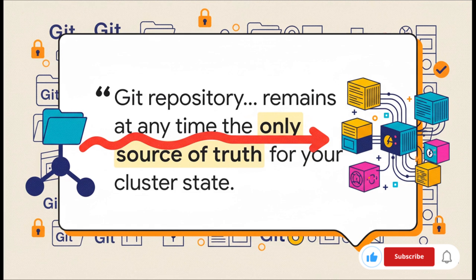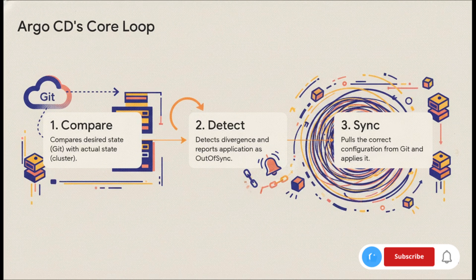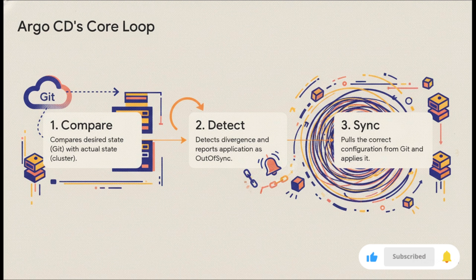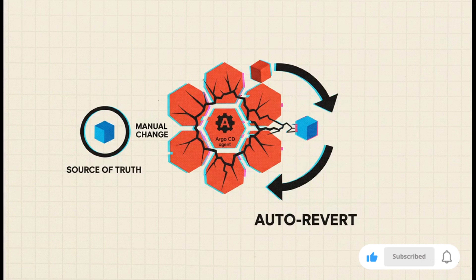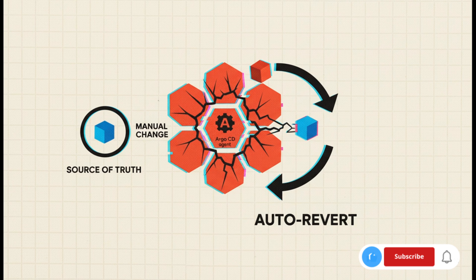The magic is in a continuous loop: ArgoCD is constantly comparing the desired state in Git with the actual state in your live cluster. The second it spots a difference, it flags the app as out of sync and immediately pulls the correct configuration from Git to make the cluster match again. And what happens in the real world when a developer uses kubectl to make a quick manual change directly to the cluster, bypassing Git? ArgoCD sees that as a deviation — damage that needs to be repaired — and automatically reverts the change, healing the cluster back to the state defined in the repository. It's relentless in making sure Git is the only source of truth.